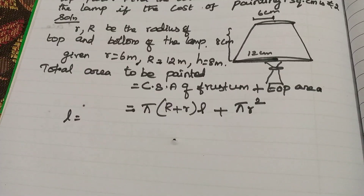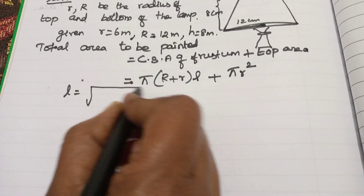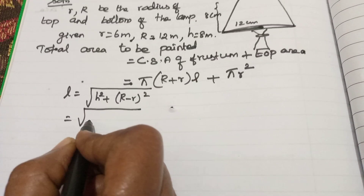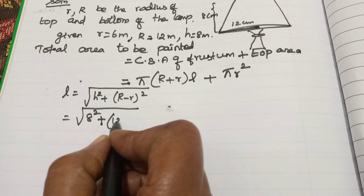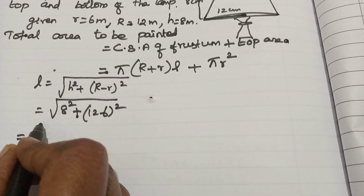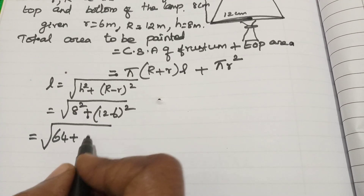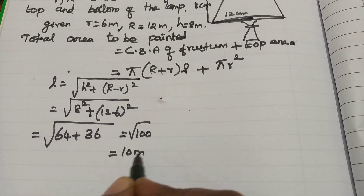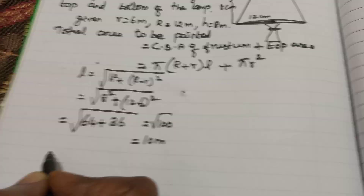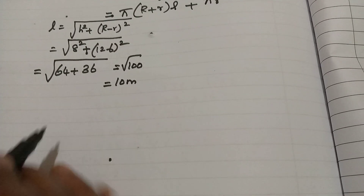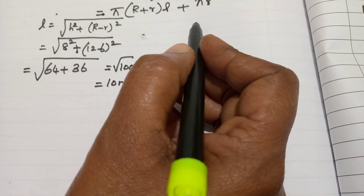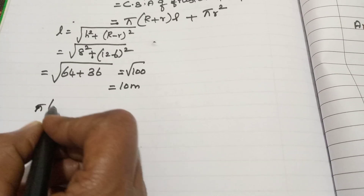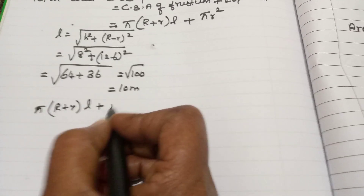L equals square root of height squared plus capital R minus small r the whole square, equals square root of 8 squared plus 12 minus 6 the whole square, equals square root of 64 plus 36, equals square root of 100, which equals 10.